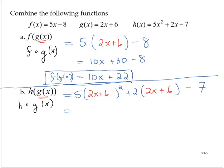Following the order of operations, I would deal with the exponent first. 2x plus 6 squared is 4x squared plus 24x plus 36, and I'll leave 2 times 2x plus 6 minus 7.